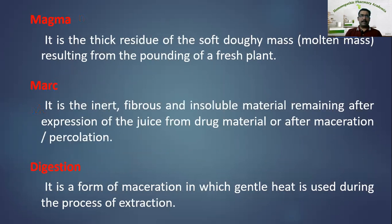Magma is a thick residue of soft doughy mass or molten mass resulting from the pounding of fresh plant. Before the preparation of a drug, the drug substances are made into pulp form — that is called a soft doughy mass or molten mass. Whenever you make a drug extract from a plant or animal origin substance, you first make it into a pulp form, which is known as magma.